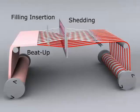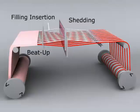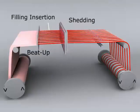Beat-up is the third motion that the weaving machine performs. It is done with the aid of a reed as it moves forward, beating the filling yarn into the fabric.